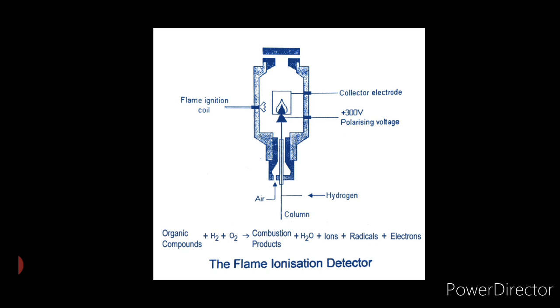A flame supported by hydrogen gas and air is used to burn organic vapors as they leave the column. Electrons and ionic fragments are produced upon combustion of the organics. This is the reaction that takes place: organic compounds plus H2 plus O2 gives us combustion products plus H2O plus ions plus radicals plus electrons.